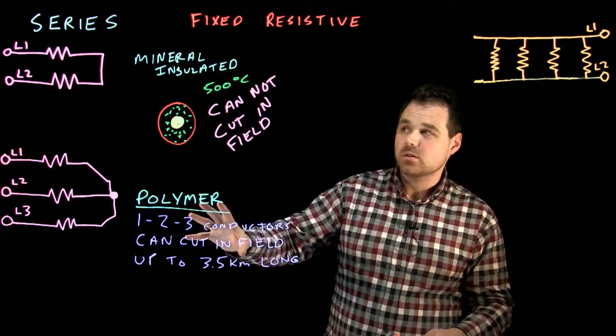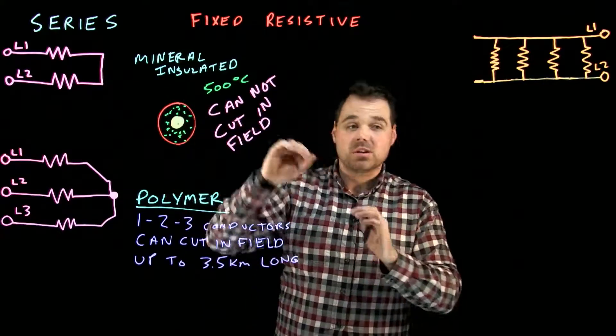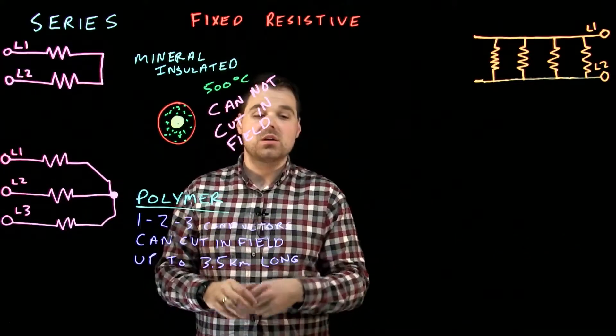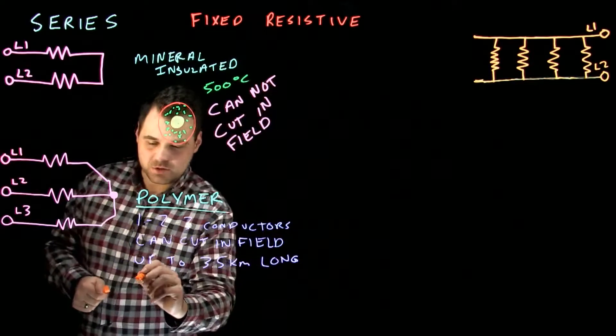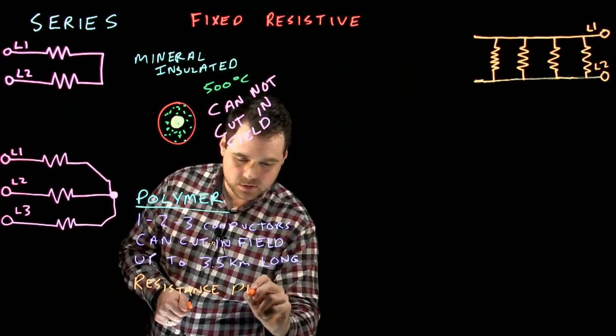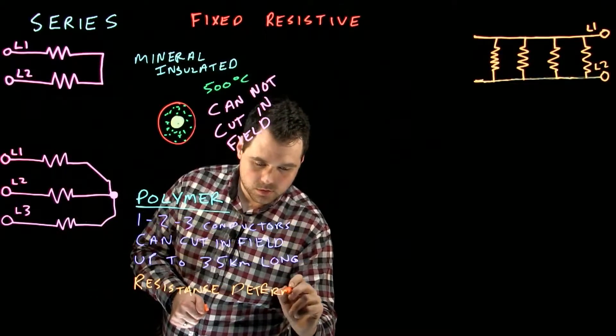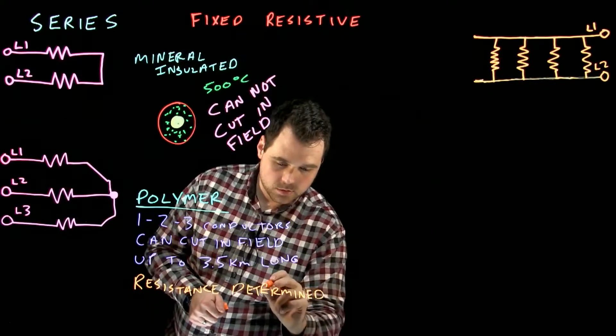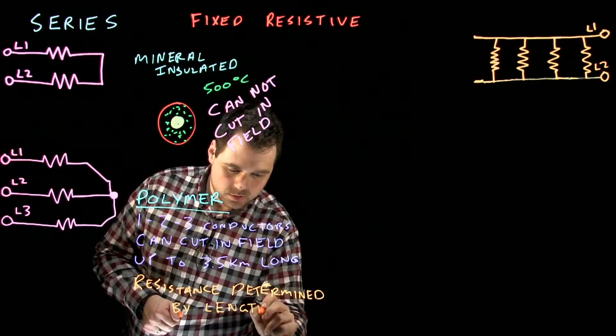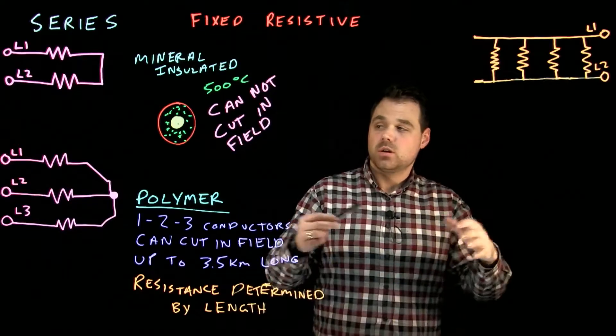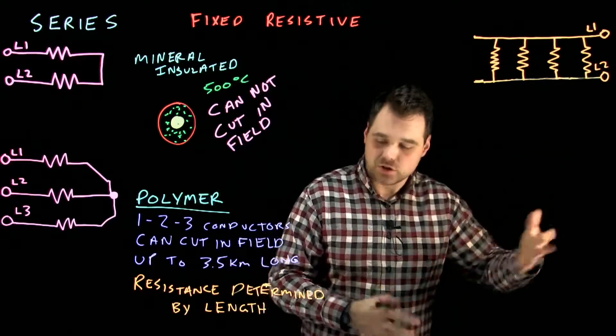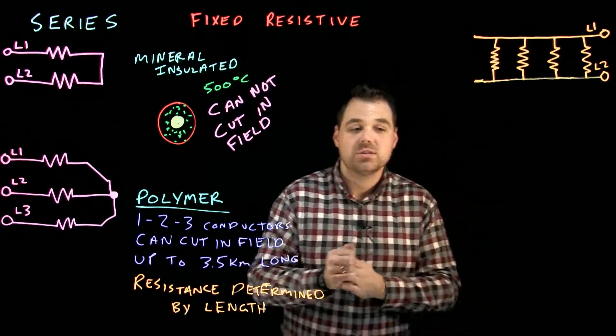One thing to remember with these polymer ones, where you are cutting them, mineral insulated, you custom order it to what you need for the amount of heat and the length you need. You would order it like that. With the polymer, because we are cutting it in the field, you have to remember that your resistance is actually determined by the length. So it's going to have a resistance, an ohmic value per meter long. Once you cut it, you're going to lose those ohms, which would increase your current. So these are just things you have to take into account when you're doing the calculations.